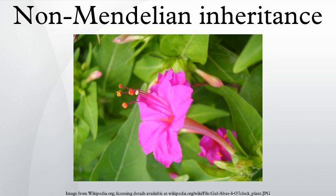Genomic imprinting represents yet another example of non-Mendelian inheritance. Just as in conventional inheritance, genes for a given trait are passed down to progeny from both parents. However, these genes are epigenetically marked before transmission, altering their levels of expression. These imprints are created before gamete formation and are erased during the creation of germline cells. Therefore, a new pattern of imprinting can be established with each generation.